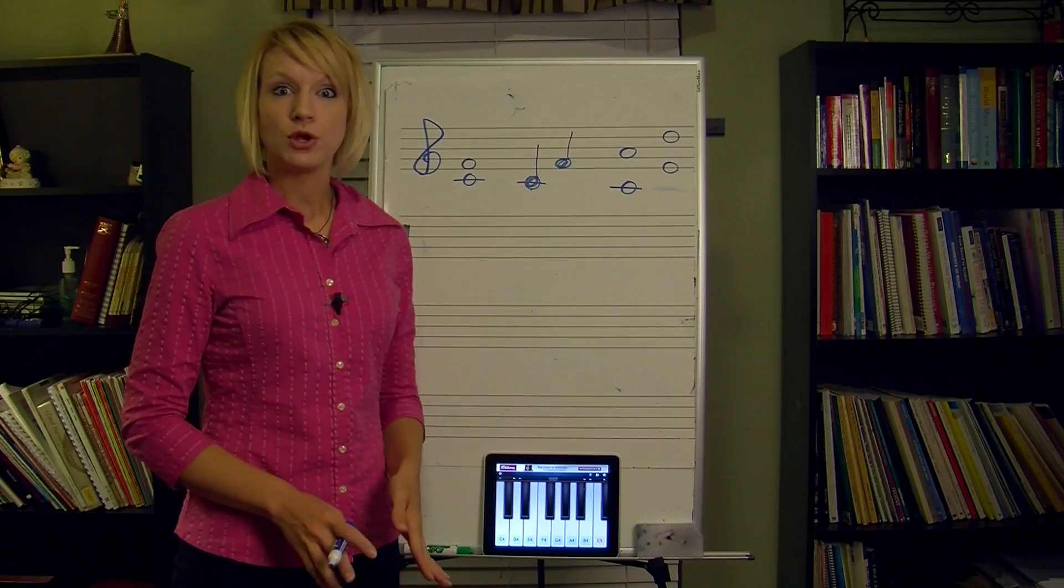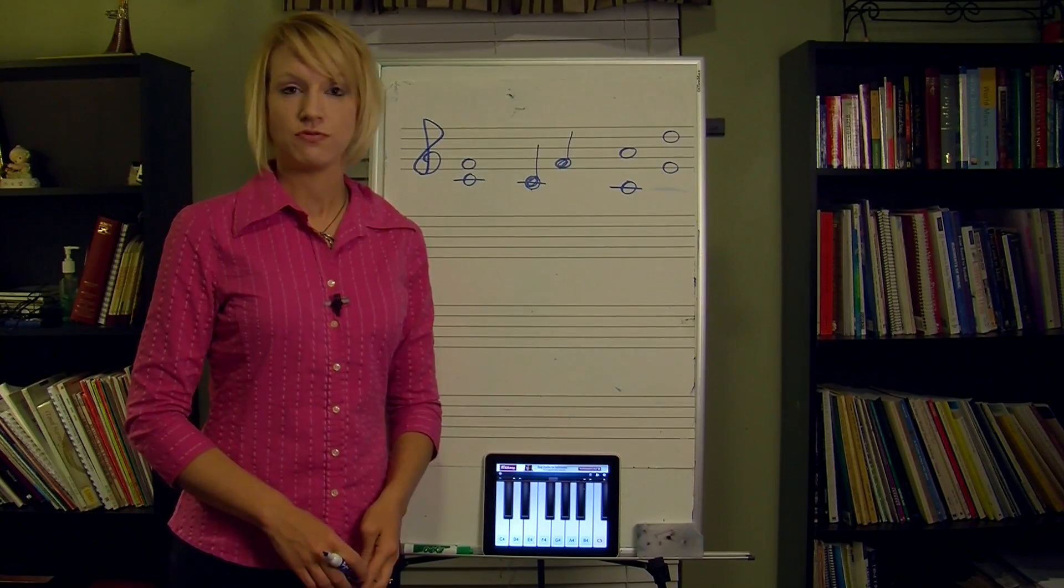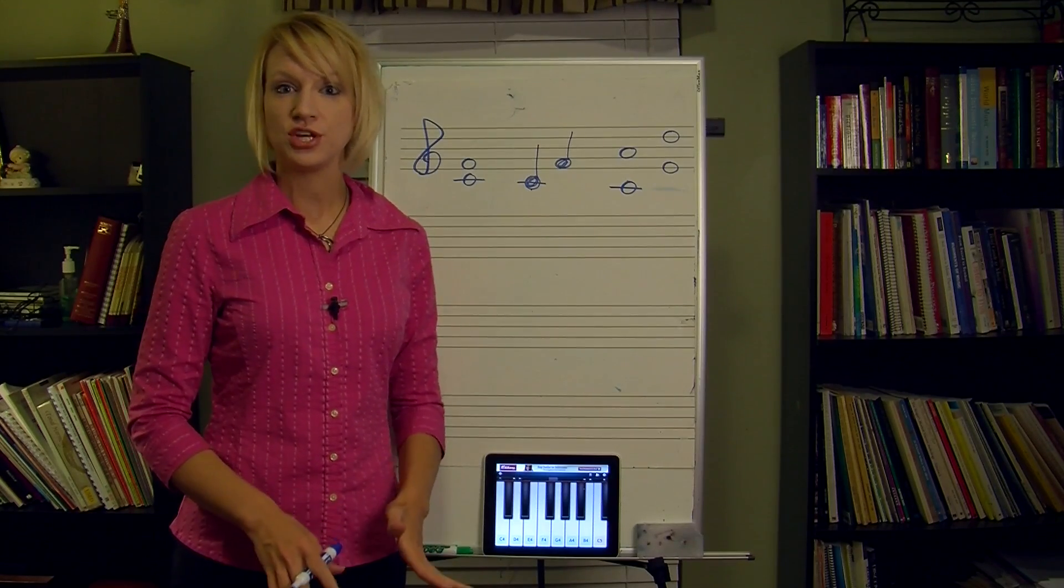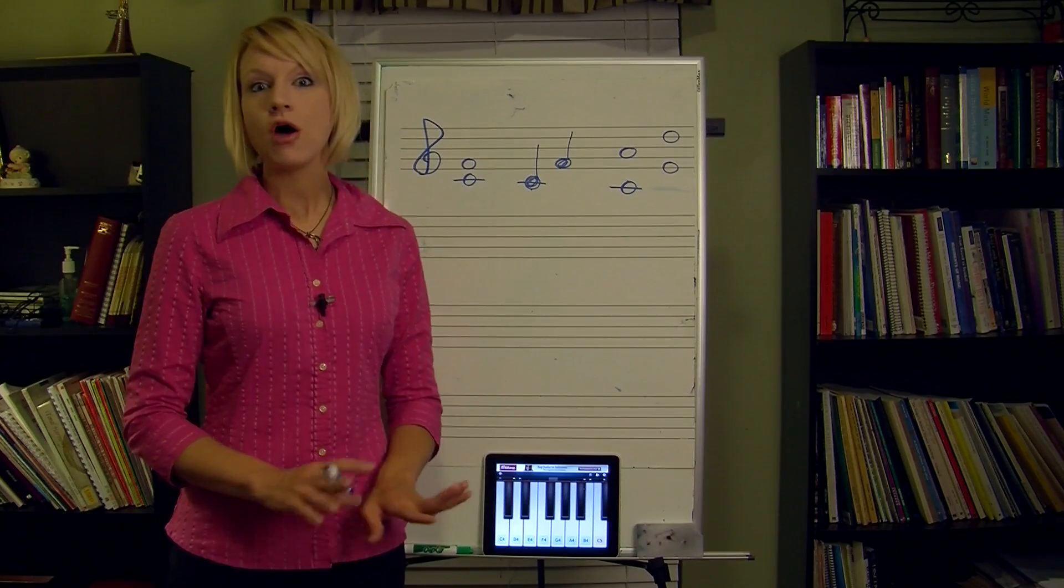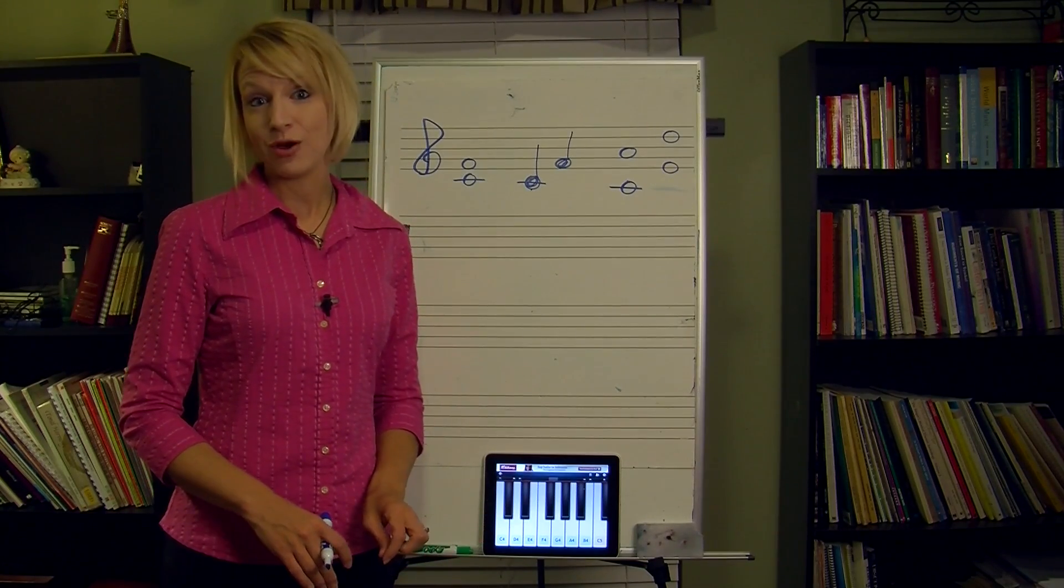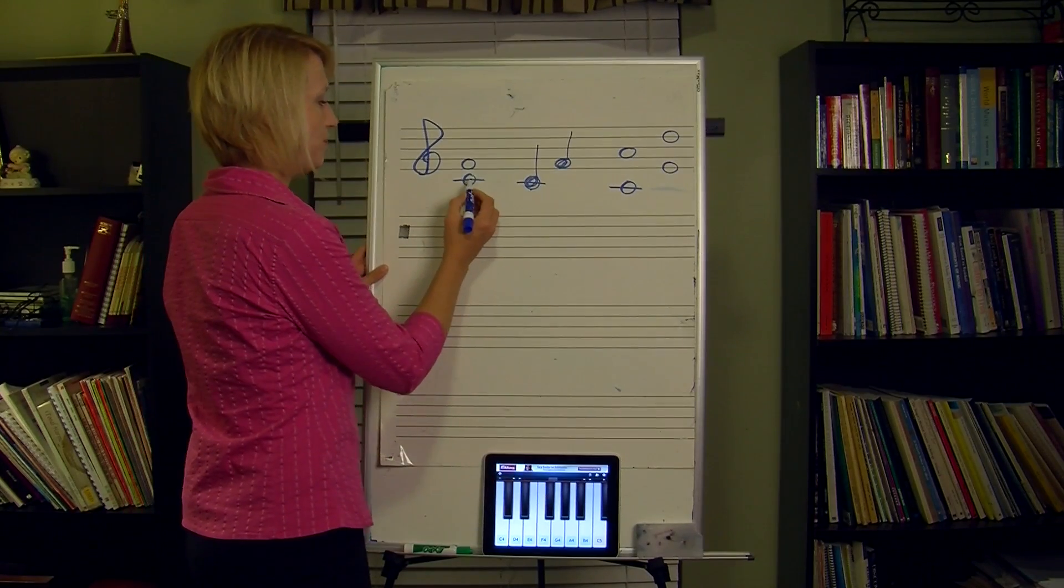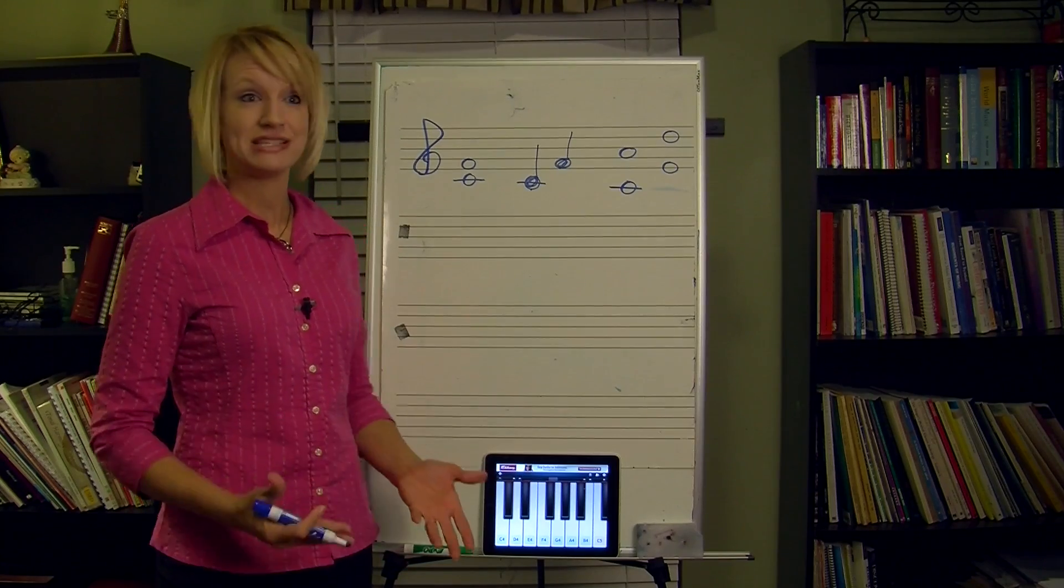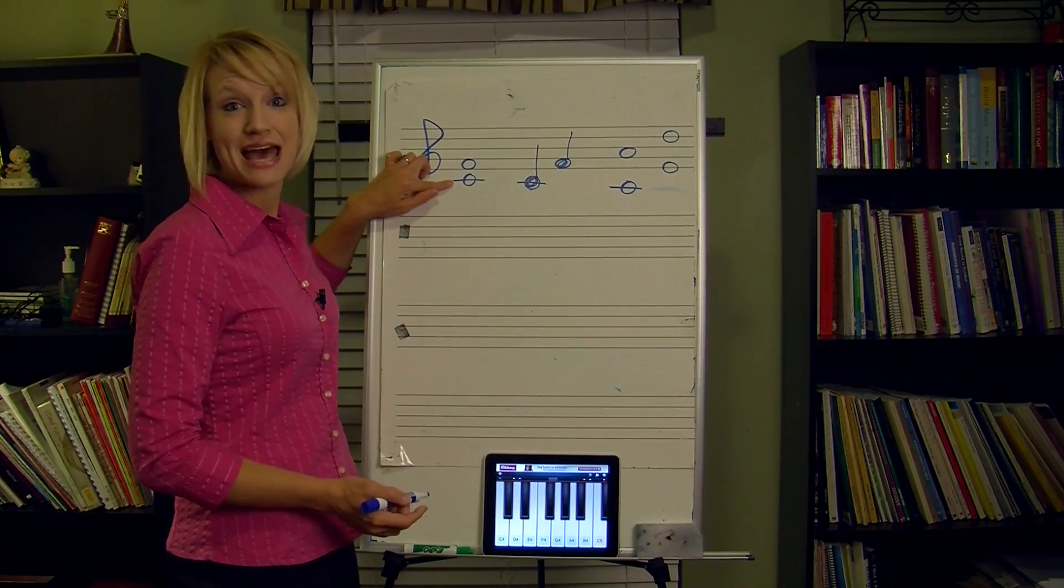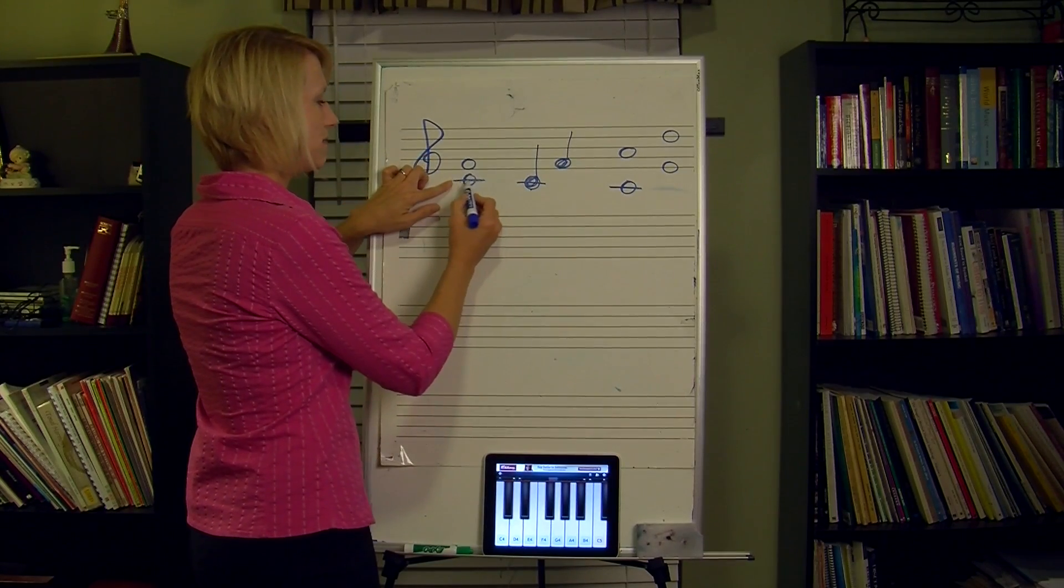Now the first thing we're going to learn besides those terms are just how we're going to name these intervals. And the first step is just to learn the generic name or the numeric name. So all that we have to do to figure out the generic or numeric name is just count. So we start from the bottom note. And we think about that bottom note like the first degree of the scale. So you can think about this as C being the bottom note like this was the C scale. So C would be the first scale degree.